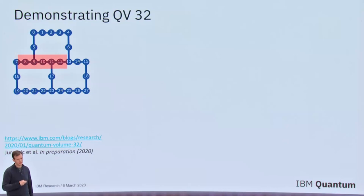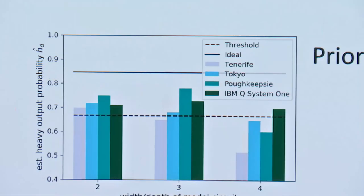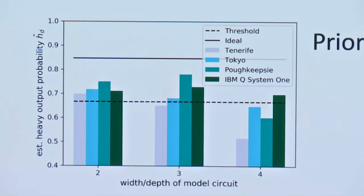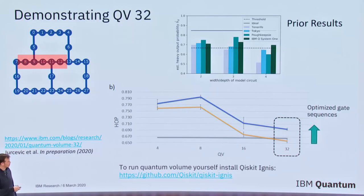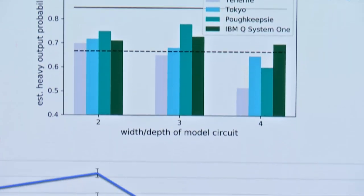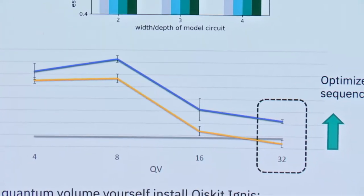Looking at the actual quantum volume numbers, here are some prior results on quantum volume from our other devices. On the IBM Q System 1, now called Johannesburg, we obtained a quantum volume of 2 to the 4, so 16. And now on our most recent Raleigh device, with some optimization over our gates, we can get a very clear signature of quantum volume 32.